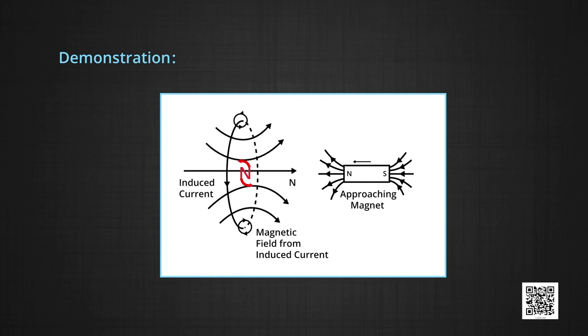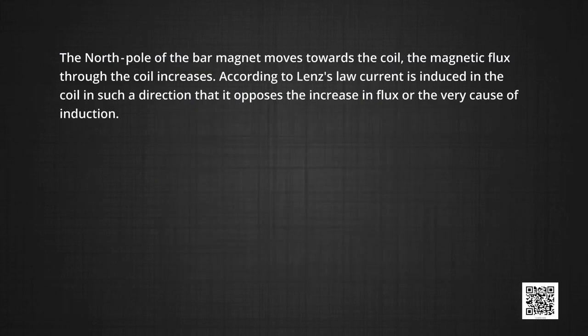Take a look at the diagram. We conclude that as the north pole of the bar magnet moves towards the coil, the magnetic flux through the coil increases. According to Lenz's law, current is induced in the coil in such a direction that it opposes the increase in flux — the very cause of induction. We made a nice conclusion by sincerely following Lenz's law.